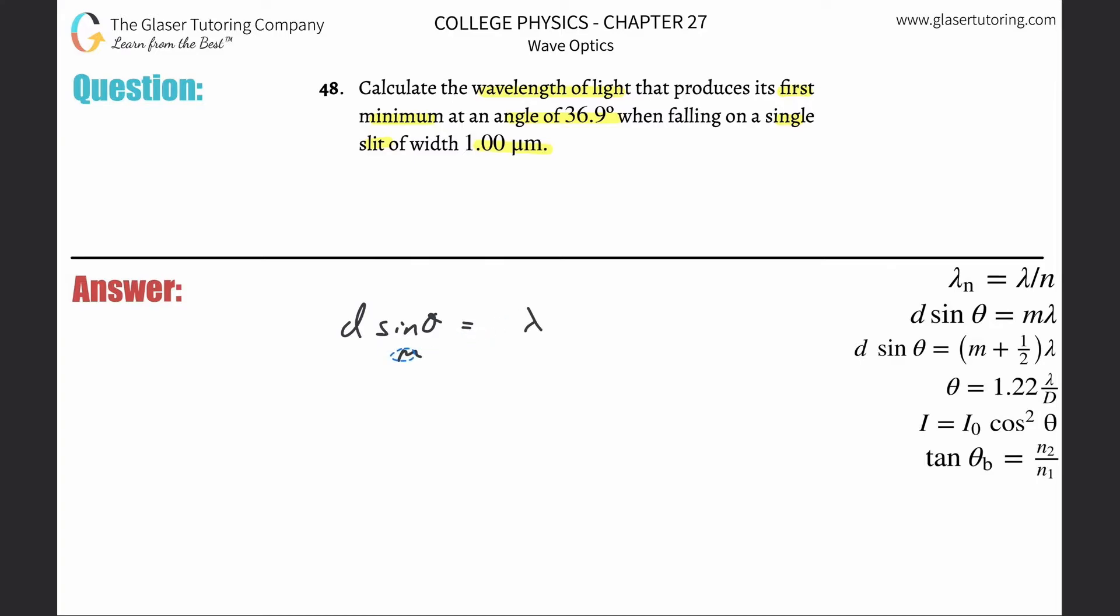Calculate the wavelength. Divide out M from both sides. And there you go. So what's D? D is the distance between the slit. So this is one micrometer. Convert that into meters - multiply that by 10 to the minus 6.